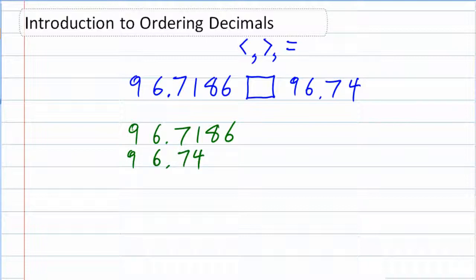I was being specific whenever I lined these up to make sure that I lined up the decimals above each other so that I'm comparing place value for place value.